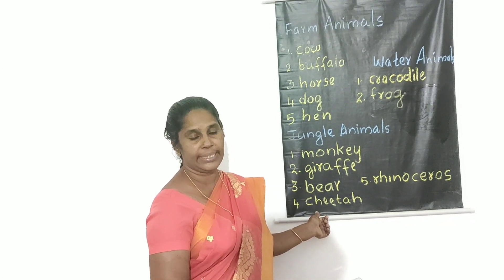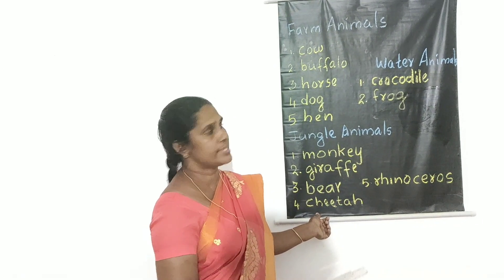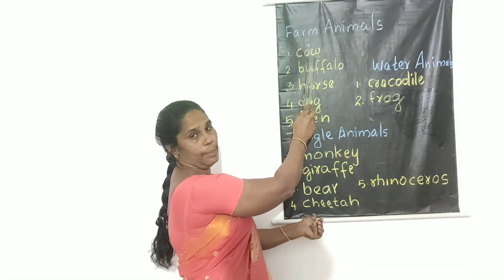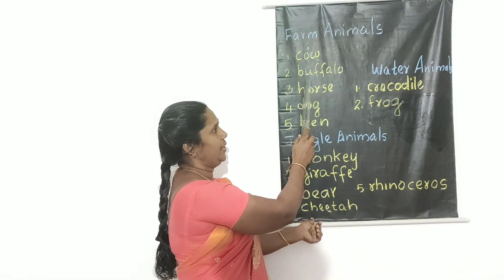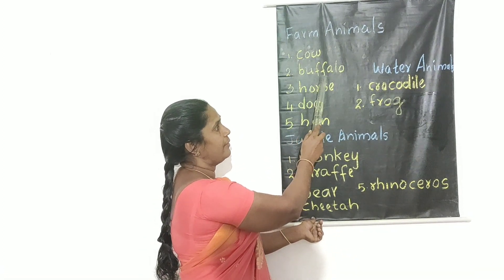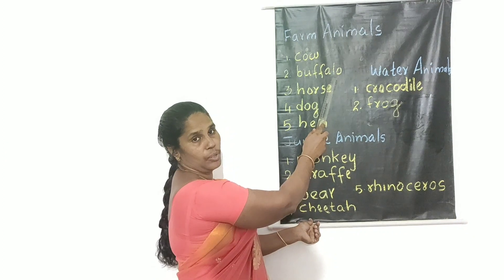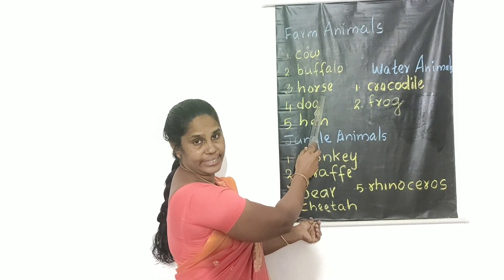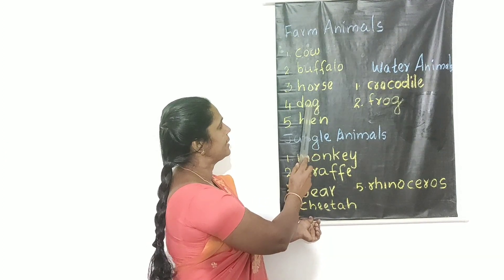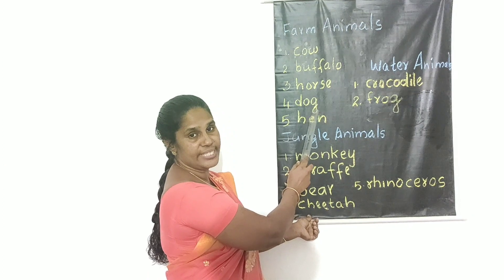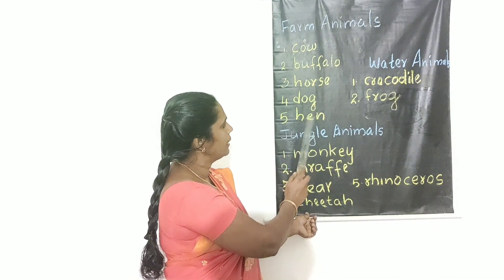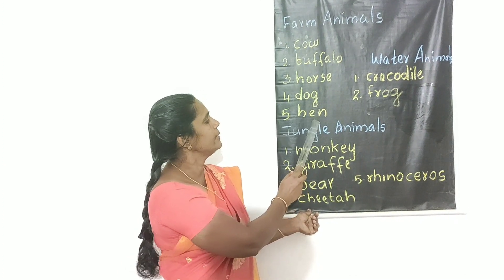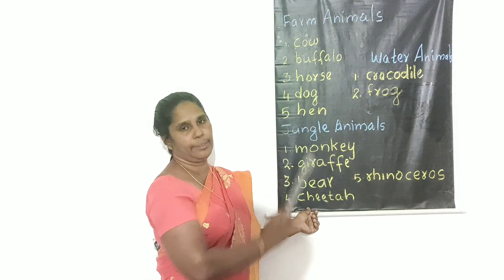C-O-W, cow. B-U-F-F-A-L-O, buffalo. H-O-R-S-E, horse. D-O-G, dog. H-E-N, hen. They are farm animals.